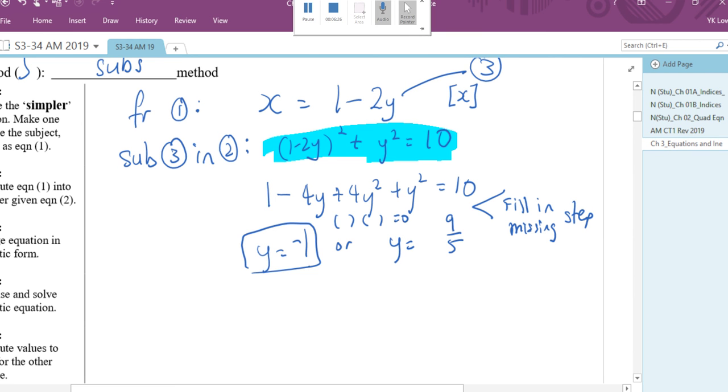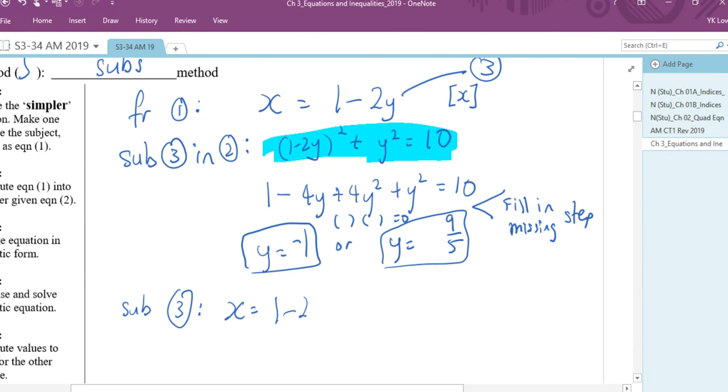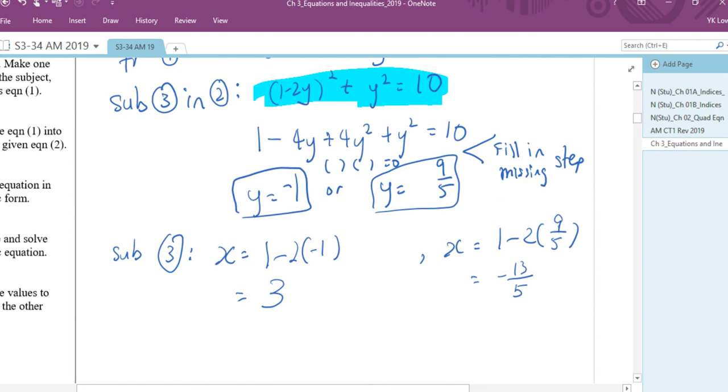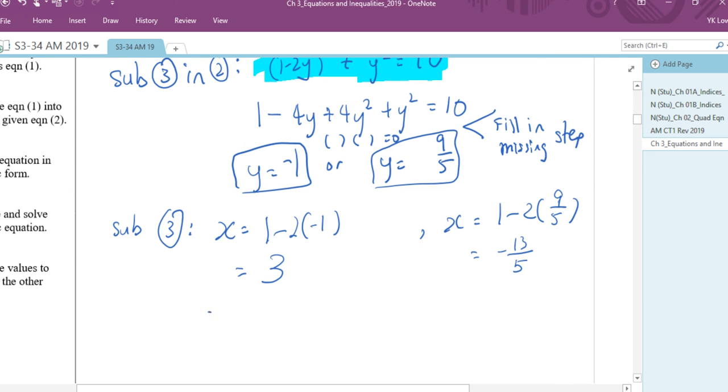Okay. Now once I have these two answers, what do I do? Very simple. I will substitute back in 3. x equals to 1 minus 2 bracket. What do I put? Comma. x equals to 1 minus 2 bracket. What do I put inside these two brackets? Negative 1 and 9 over 5. Can you write down the answer? Like just tell me verbally using calculator, what's the answer? The other one? Minus 13 over 5.